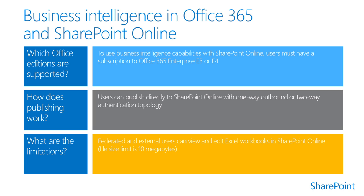Power BI for Office 365 Sites is an application that transforms a basic SharePoint site into a robust, dynamic way to view and share Excel workbooks. Power BI sites on Power BI for Office 365 also provide people with an easy way to access all of the BI capabilities included in Power BI for Office 365. Power BI Q&A enables people to search for information by using natural language queries. A workbook author uses Power Pivot to add synonyms to a workbook, and after that workbook is uploaded to Power BI sites on Power BI for Office 365, people can discover and interact with the data more easily.